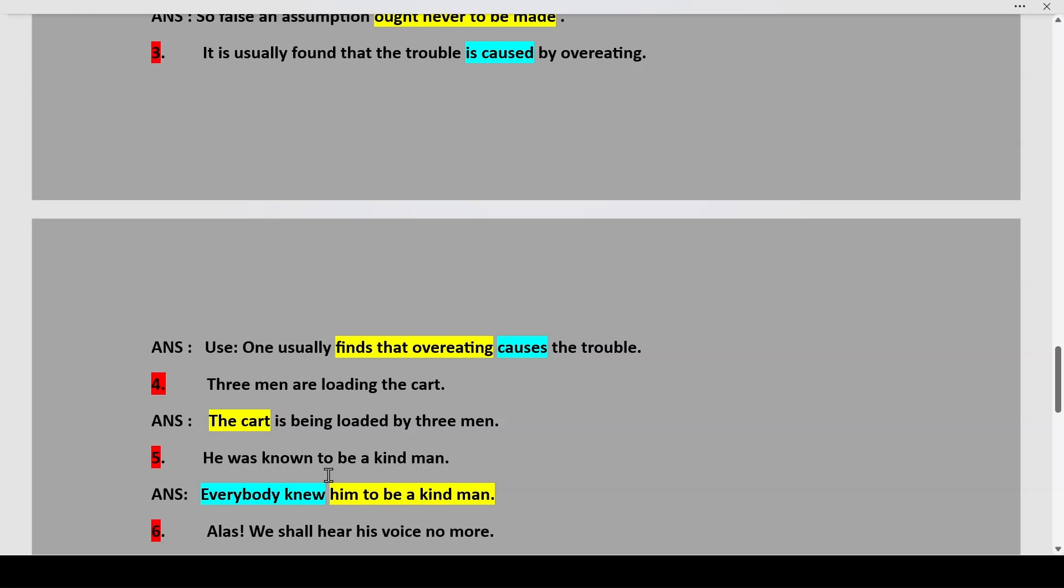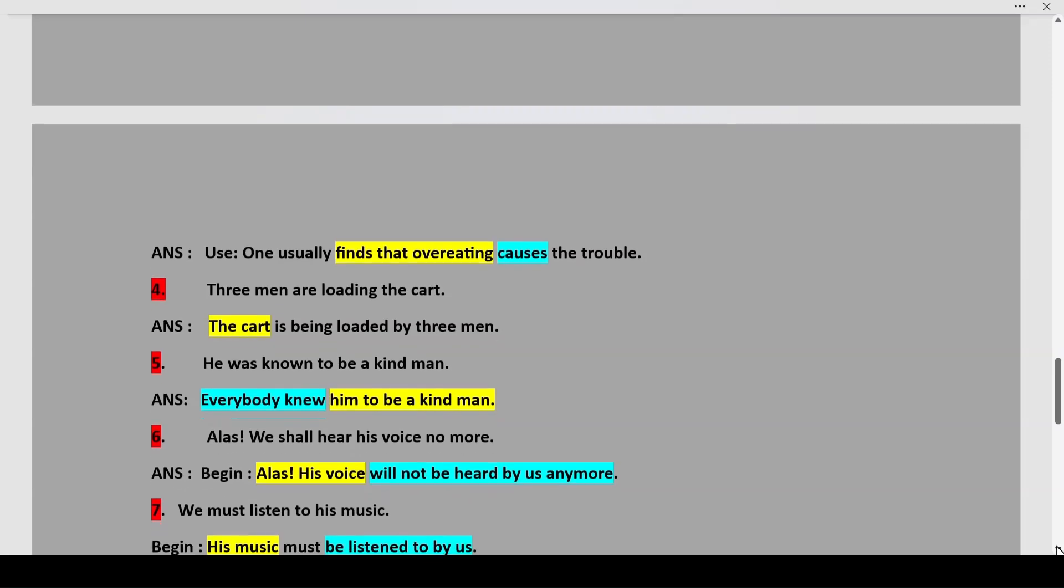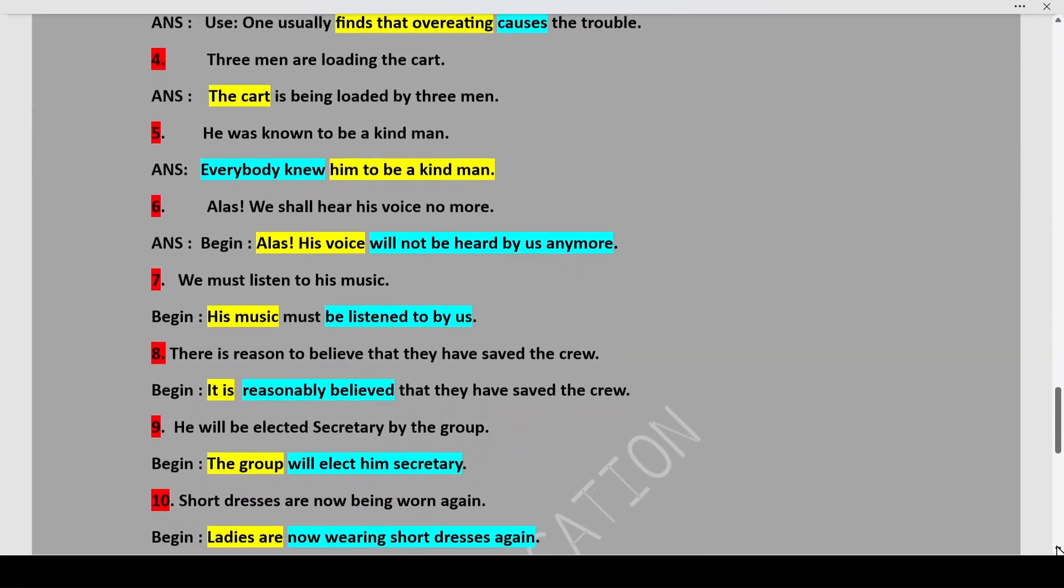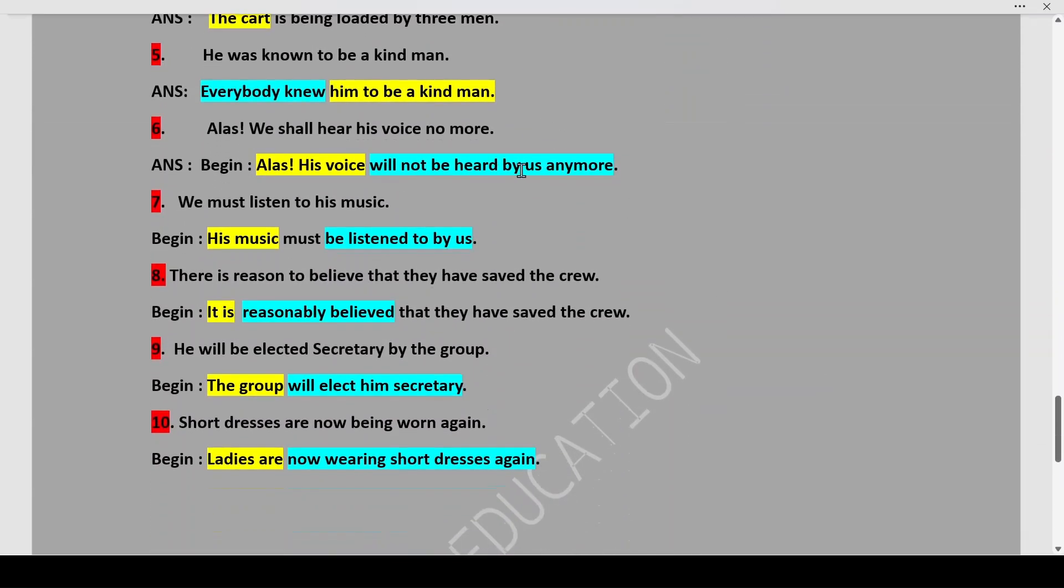He was known to be a kind man. Everybody knew him to be a kind man. He was known to be a kind man by everybody need not be mentioned. It is understood. So, everybody knew him to be a kind man. Alas, we shall hear his voice no more. Begin with Alas, his voice will not be heard by us anymore. We becomes us. We must listen to his music. Begin with his music. His music must be listened to by us. We becomes by us. Listen become listened.